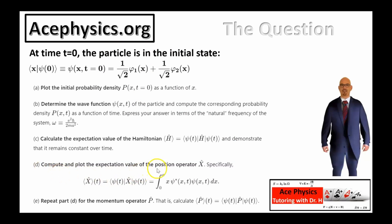Part D: compute the expectation value of the position operator x. This is the standard formula in quantum mechanics for finding the expectation value of x — the average value of x. I'll explain this more when I solve Part D. Part E is similar to Part D but asks for the expectation value of momentum rather than position.